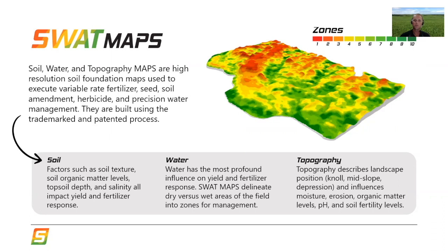Topography drives that water flow across a landscape. We're talking about knolls, mid slopes, and depressions. Topography influences water and is also the underlying factor that drives erosion. Topsoil typically moves from the tops of knolls down into depressions over time, either from wind, water, or tillage erosion. That in turn affects organic matter levels, things like pH, and ultimately soil nutrient levels that we can measure in a soil test.